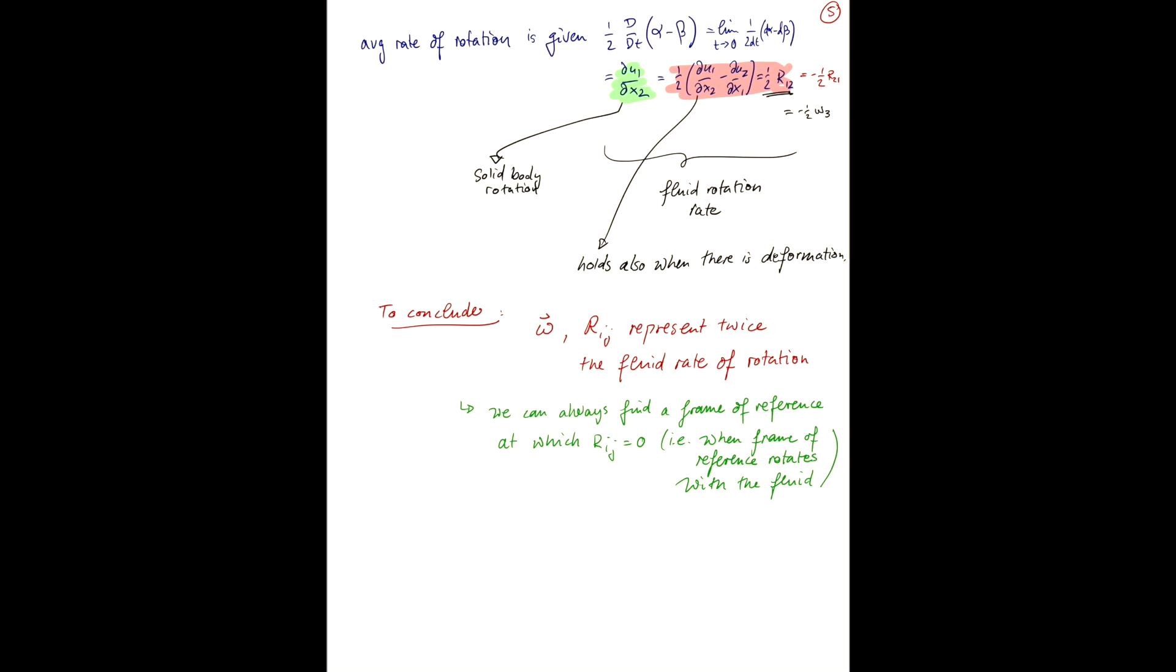Now, there are two kinematic concepts that I want to mention at this point. And the first one being is the special case where omega is zero, and that's what we call irrotational flows.